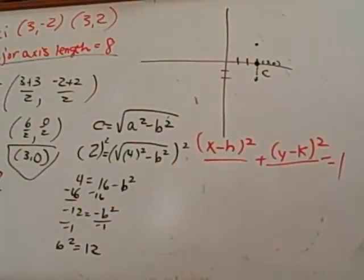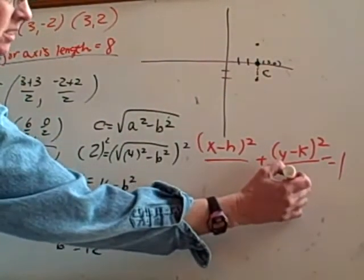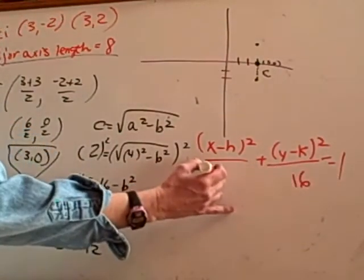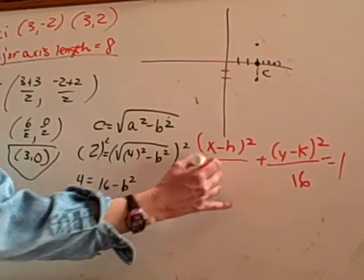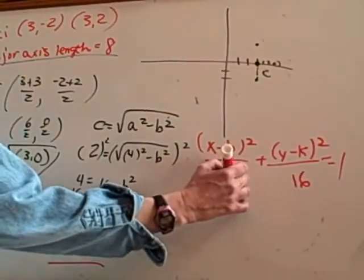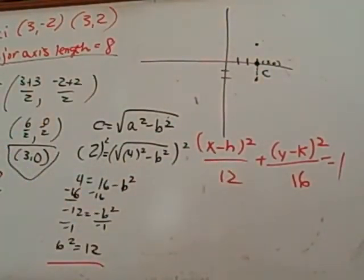Now what was A? A was 4 so what's A squared? 16. 16. What was B? We don't know B. We know B squared was 12 so 12 goes under here. Now all I have to do is plug in my center.